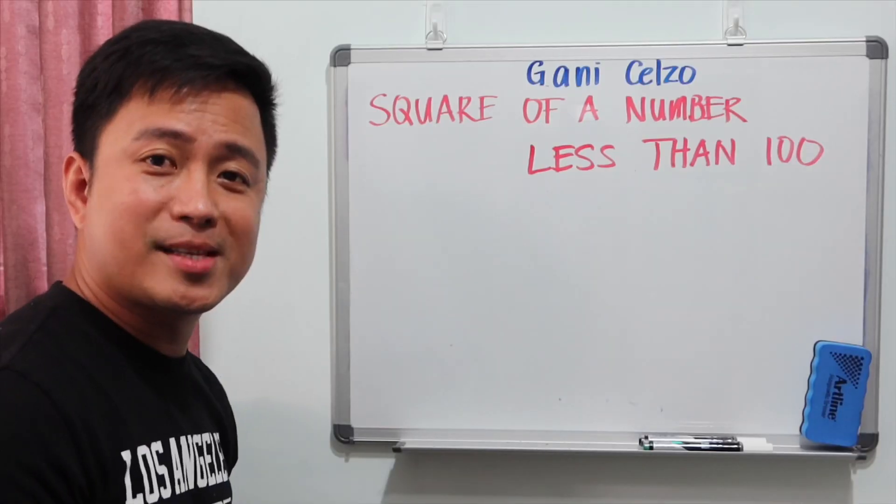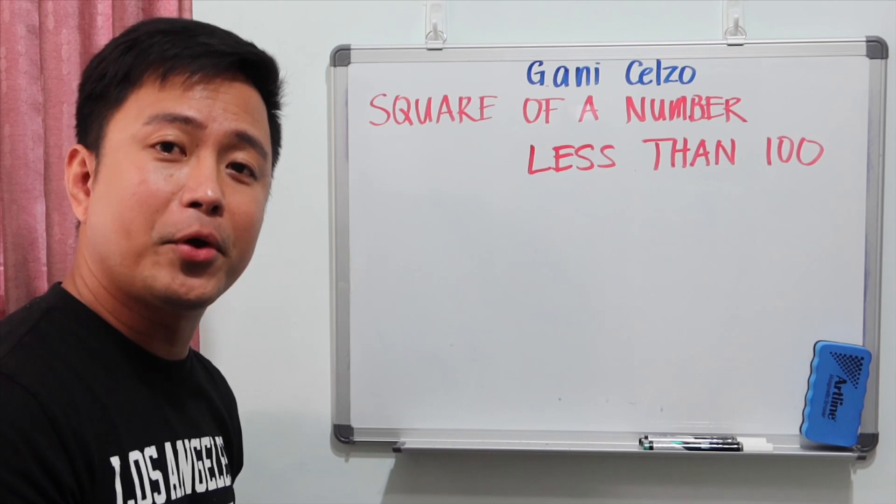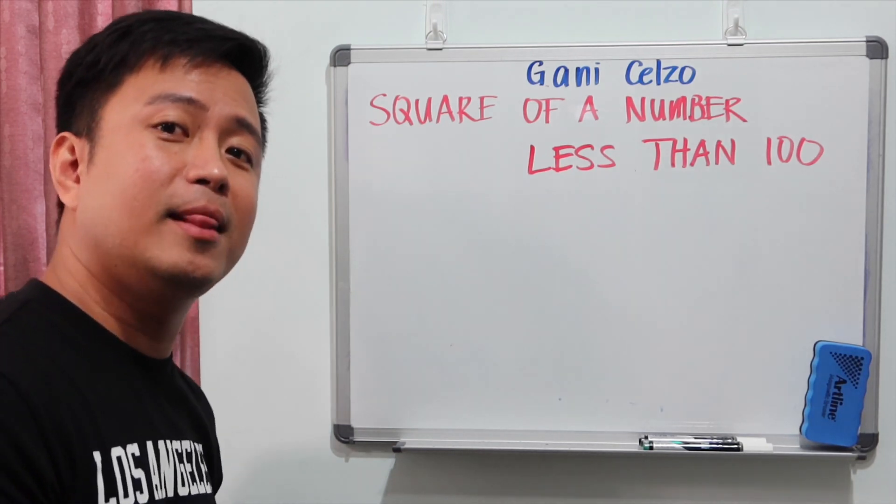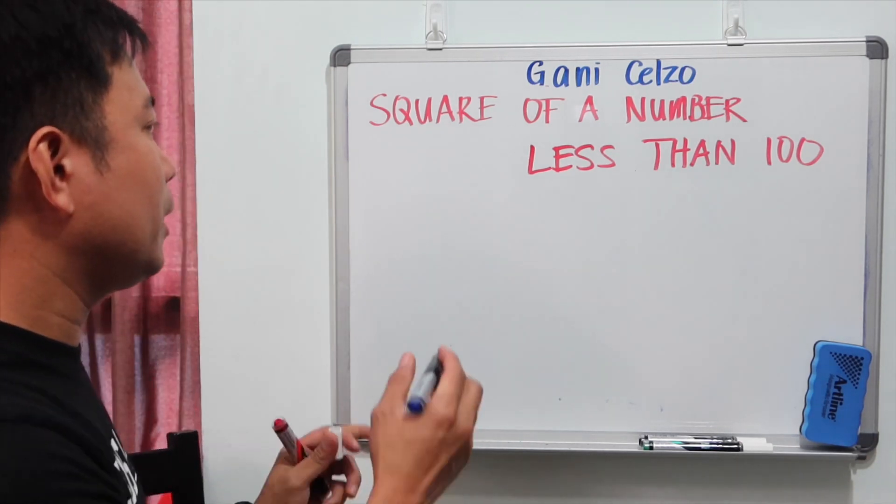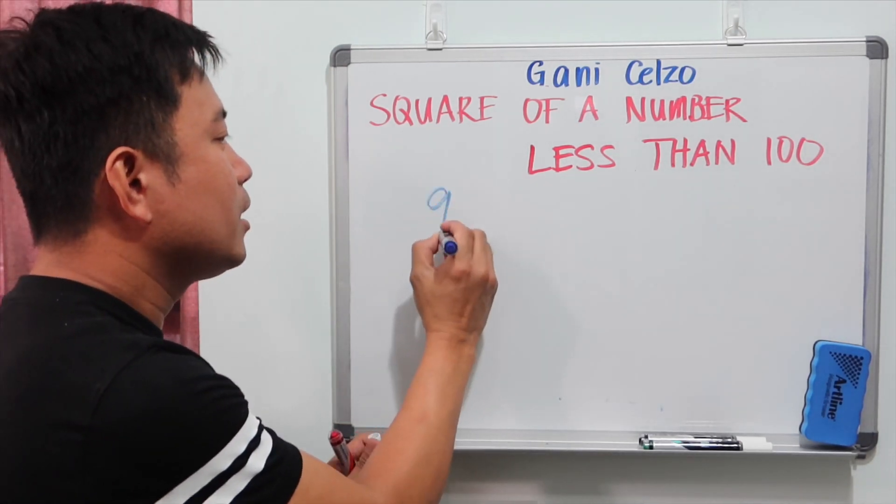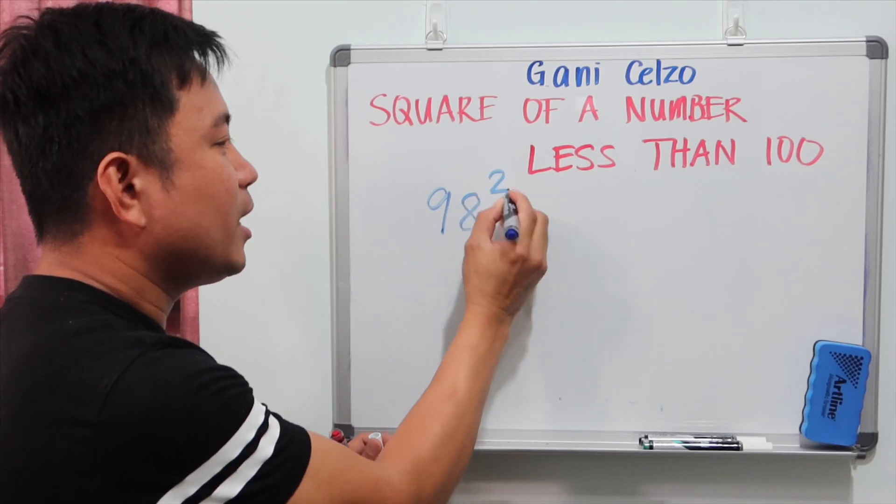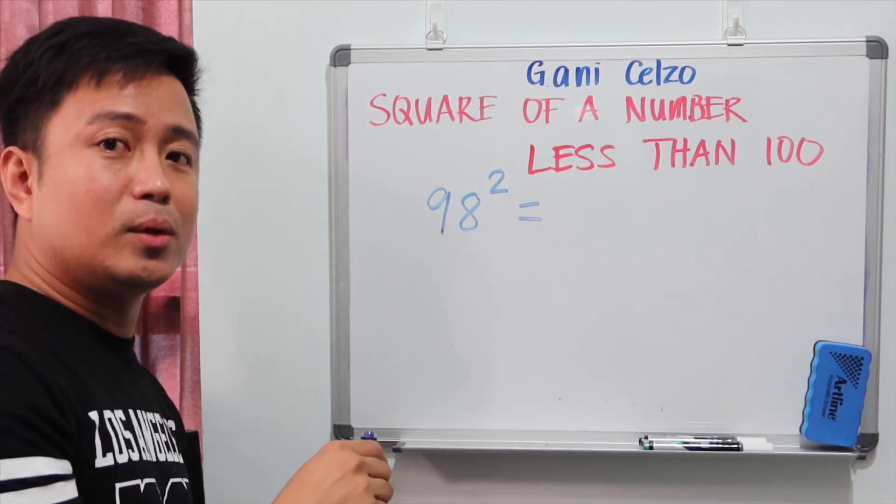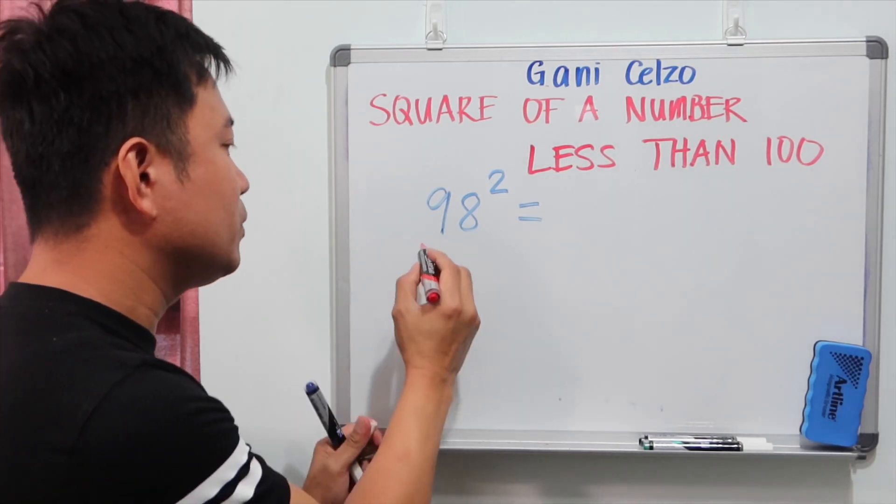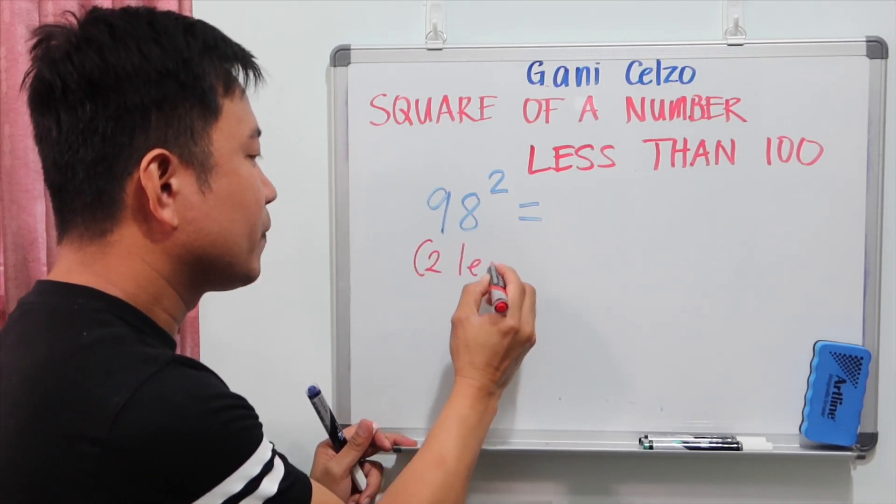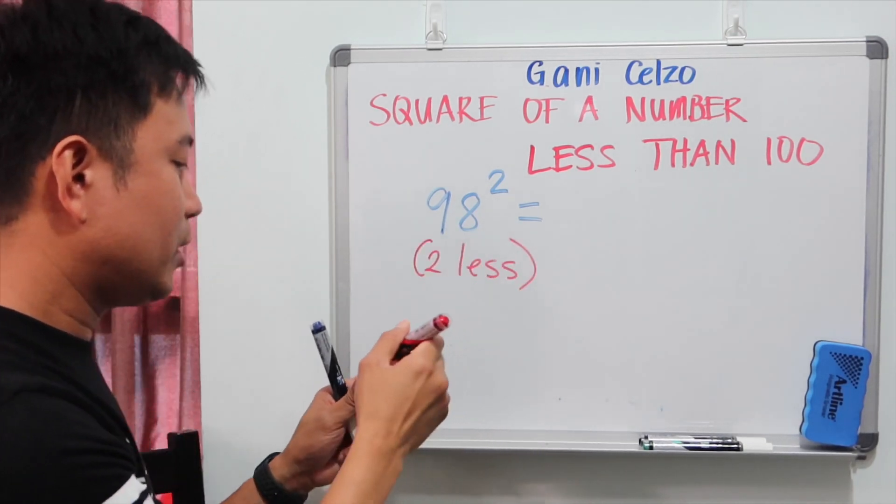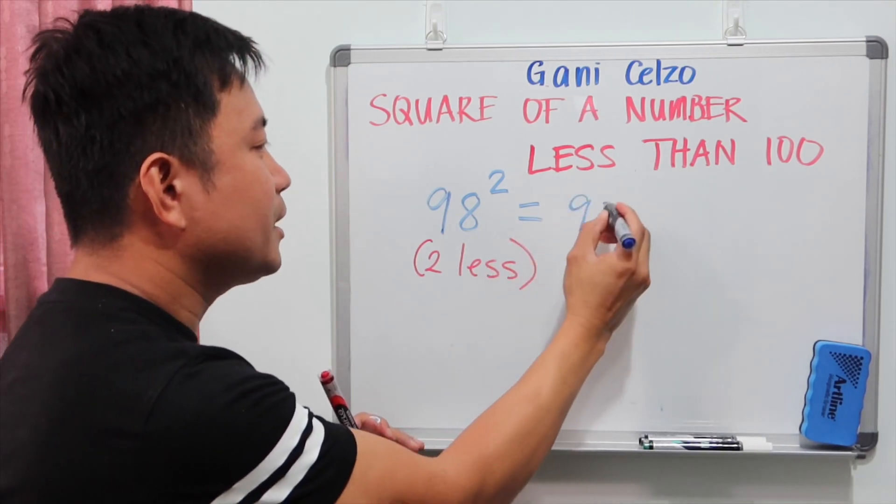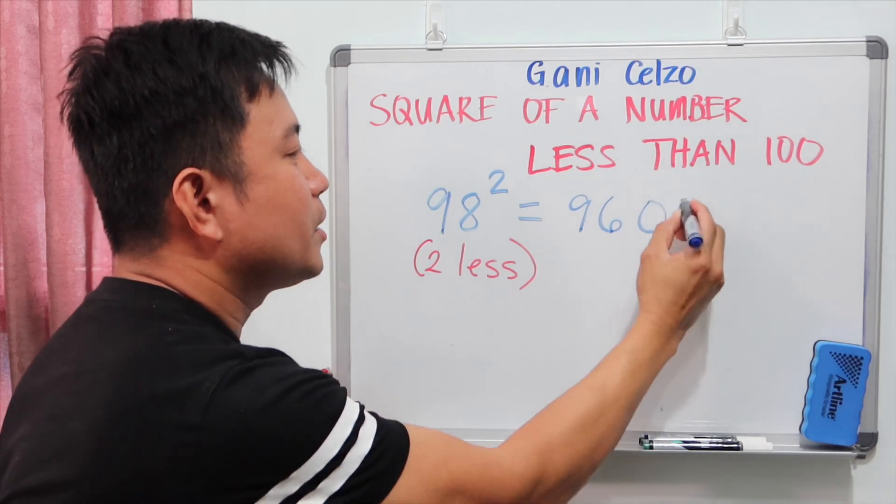So we just learned squaring numbers that are more than 100. Now we will look at the numbers that are less than 100. So for example, if we square 98, so we have 98 square. So 98 square is 2 less, take note, is 2 less than 100. So the answer to 98 square will be 96,04.